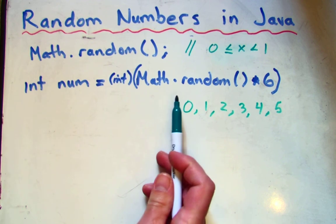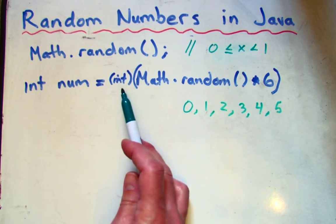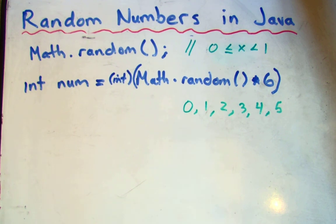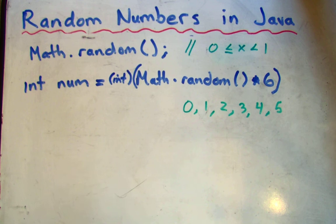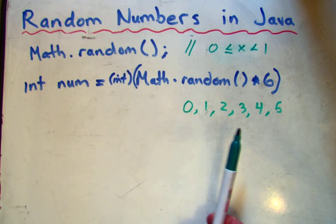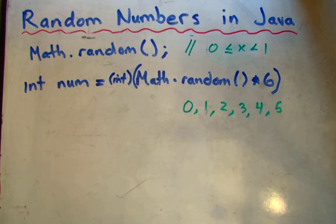So if it generated 1.6 for some reason, then when you cast it to an int, it would just become 1. If it was 0.99 times 6, it would be 5.99, and that gets rounded down to an integer, which would be 5.